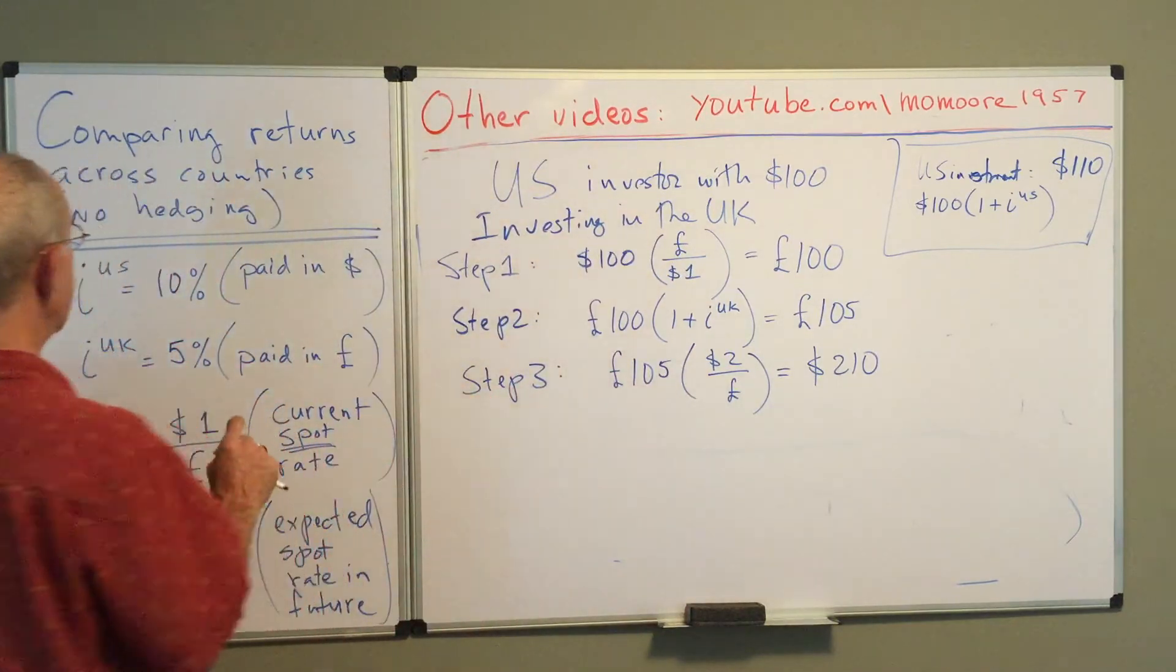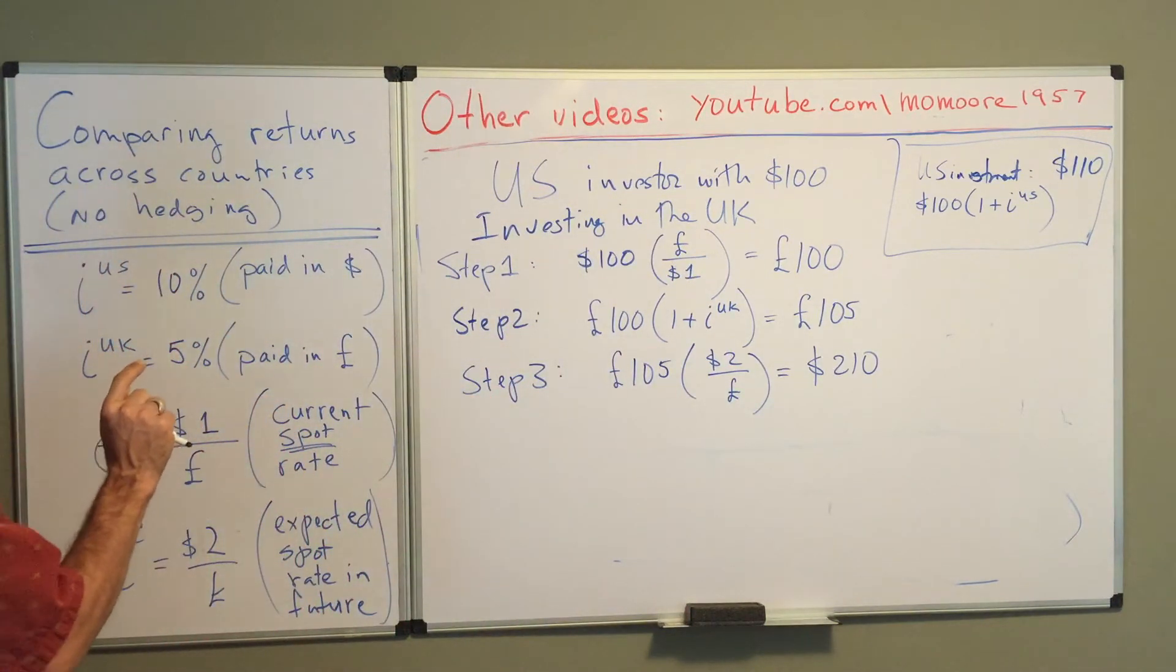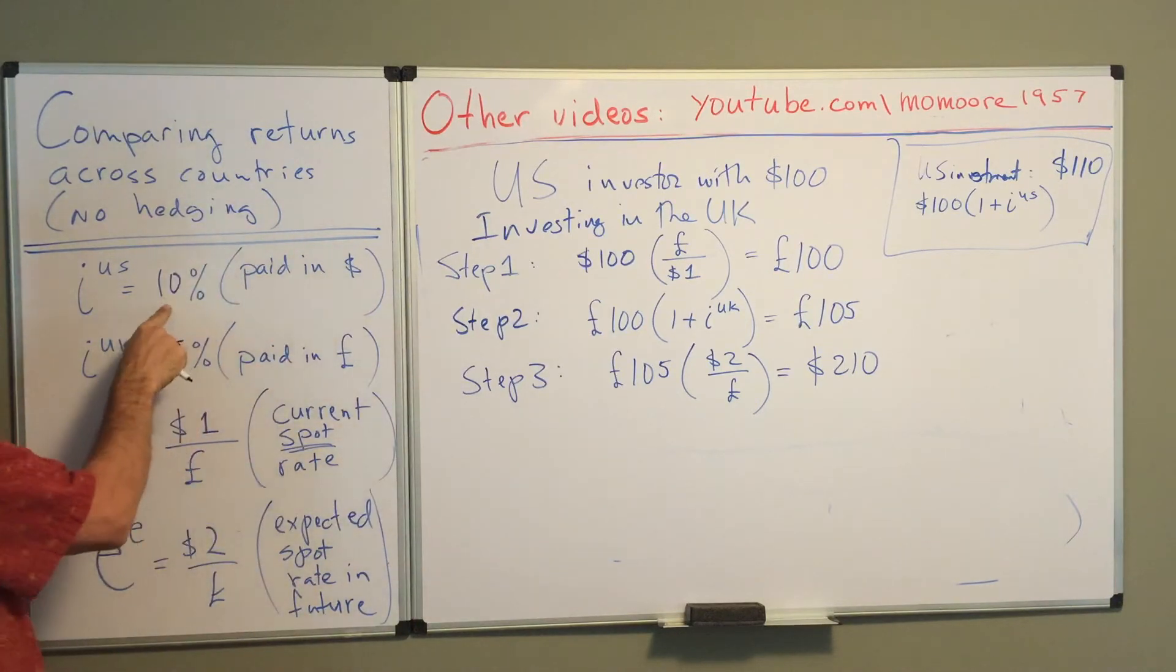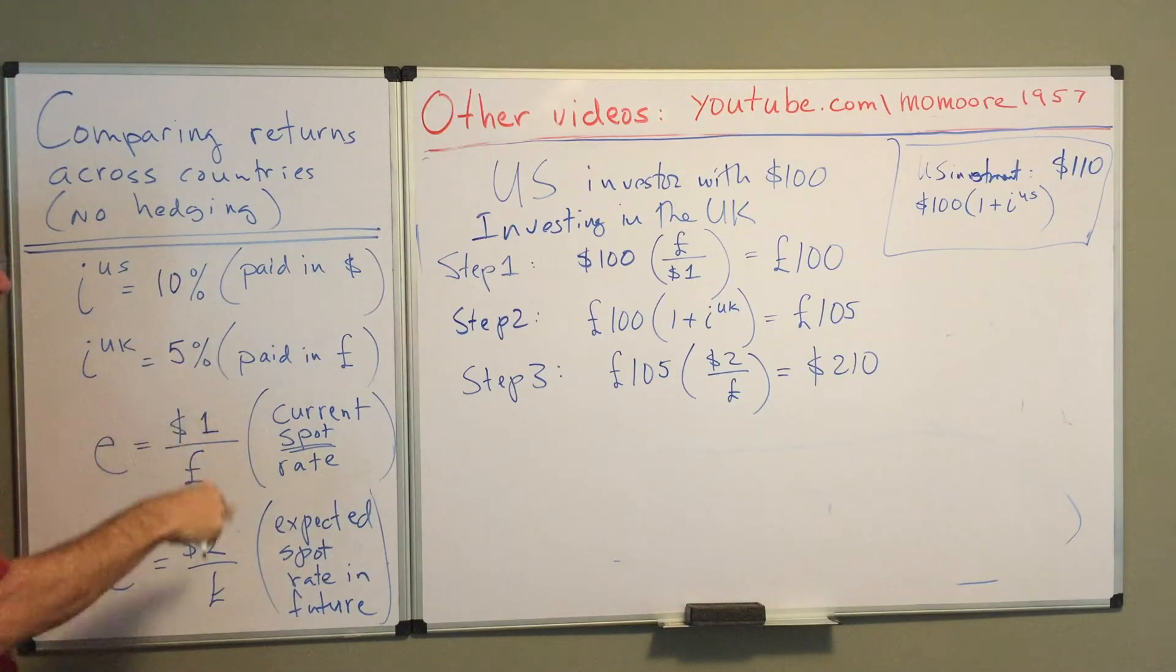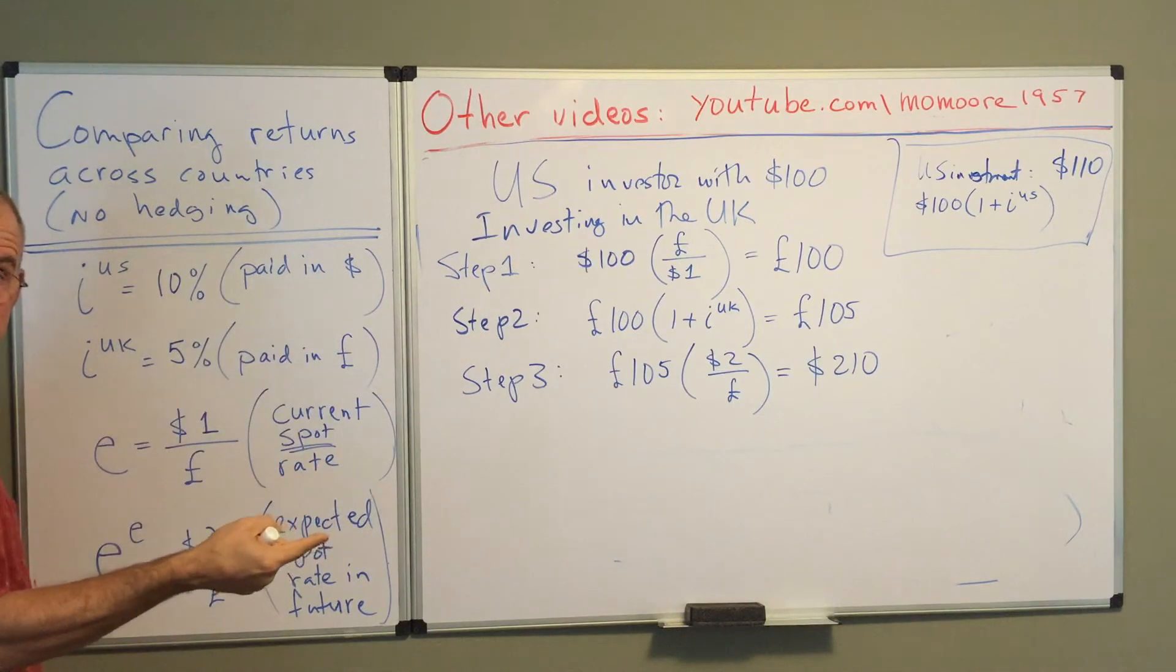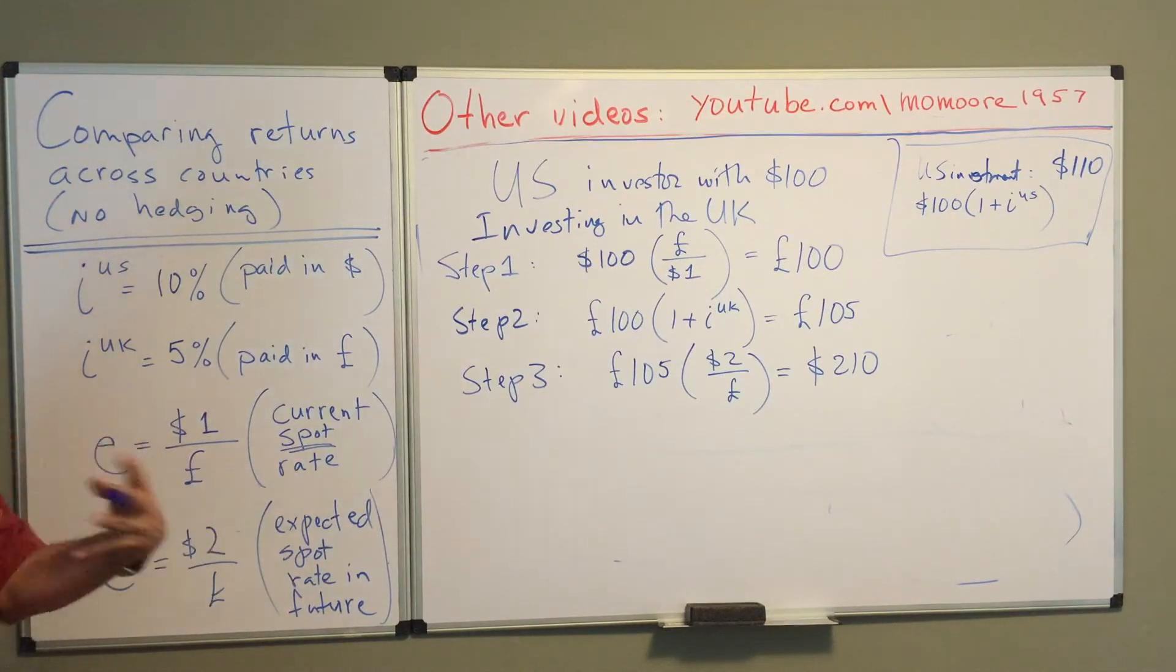So despite the fact that the U.S. interest rate is higher, the nominal interest rate is ten percent and the British interest rate is only five percent, the British investment is much more attractive. Now let's step back and think about why that is.